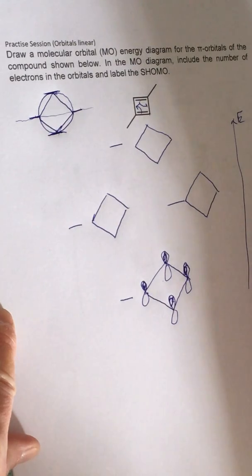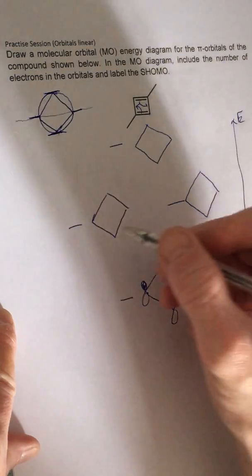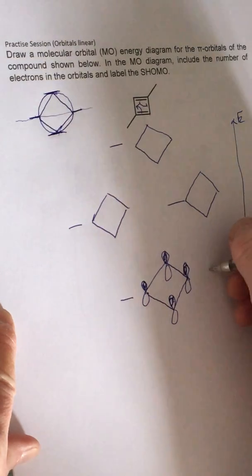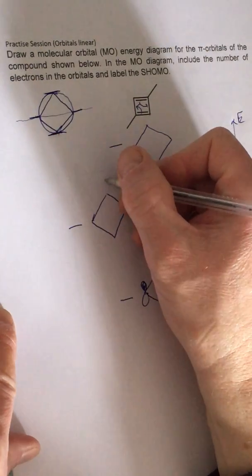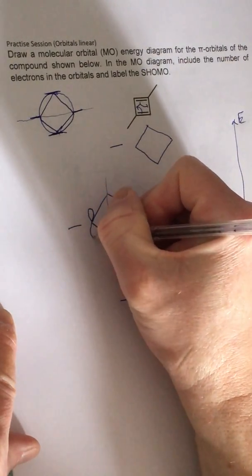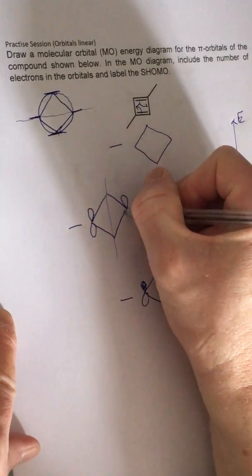And the next one up will have one node. Notice there are two degenerate ones each with one node, so we go zero node, one node, two nodes. So one can go through there, through the corners if you like, and then